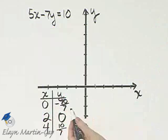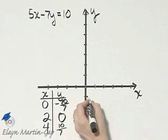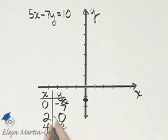Zero, negative 10 sevens. That's negative 1 and 3 sevens. So that's zero left or right, negative 1 and 3 sevens, a little more than negative 1.